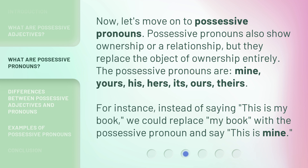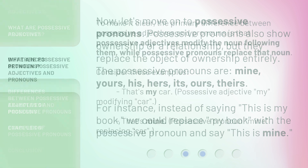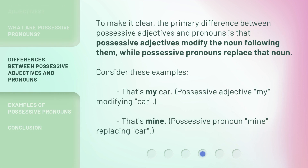Now, let's move on to possessive pronouns. Possessive pronouns also show ownership or a relationship, but they replace the object of ownership entirely. The possessive pronouns are: mine, yours, his, hers, its, ours, theirs. For instance, instead of saying 'this is my book,' we could replace 'my book' with the possessive pronoun and say 'this is mine.' The primary difference between possessive adjectives and pronouns is that possessive adjectives modify the noun following them, while possessive pronouns replace that noun.